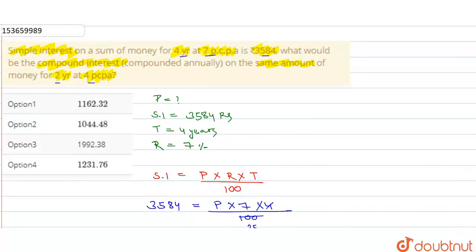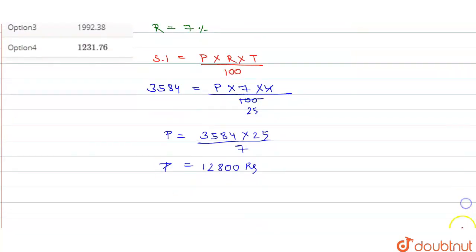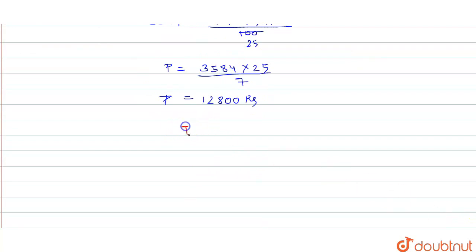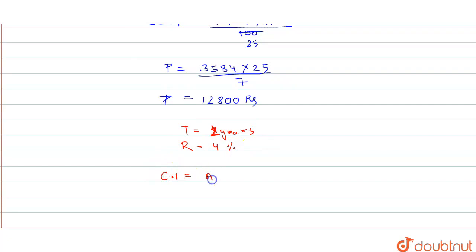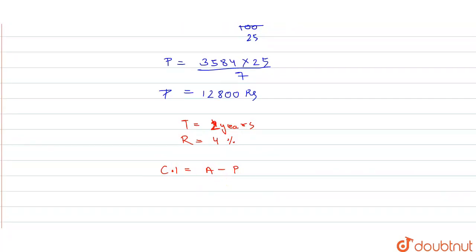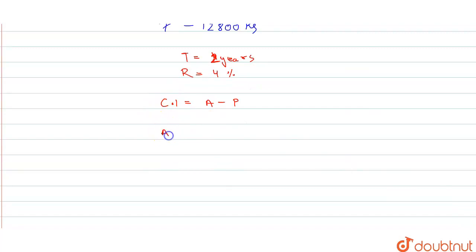अब हमें principal मालूम है। Compound interest निकालना है। इस case के लिए time period = 2 years और rate of interest = 4%। Compound interest का formula है: CI = Amount − Principal। Amount निकालने के लिए formula है: Amount = Principal × (1 + Rate/100)^n, जहाँ n = time period।